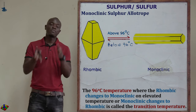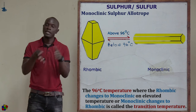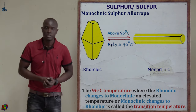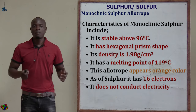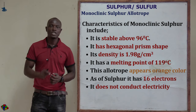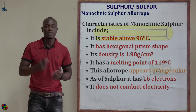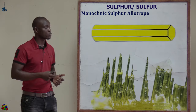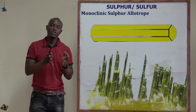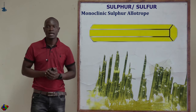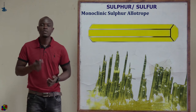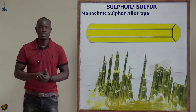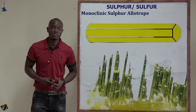The intermediate temperature for interconversion between rhombic and monoclinic sulfur is called the transition temperature. Monoclinic sulfur appears needle-shaped or hexagonal prism-shaped when observed using a hand lens. If you observe monoclinic sulfur using a hand lens, you will see that it looks needle-like or has assumed a hexagonal prism shape.